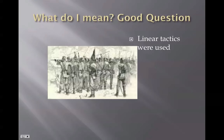They had smooth bore barrels on their muskets, so when they fired, the musket ball would come out and you just never knew where it would go — it might go out like a knuckleball.